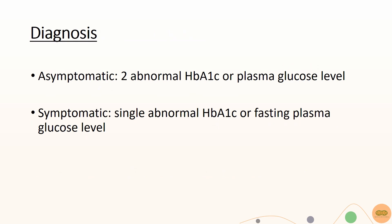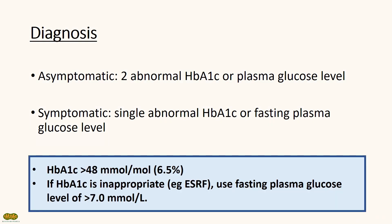Diagnosis of type 2 diabetes involves measuring HbA1c or fasting plasma glucose levels. For asymptomatic patients, you would need at least 2 abnormal results, while a symptomatic patient would only require 1. HbA1c is considered abnormal when it is more than 48 mmol per mole or 6.5%. Use fasting plasma glucose if HbA1c is inappropriate — a fasting plasma glucose of more than 7 mmol per litre is considered high.